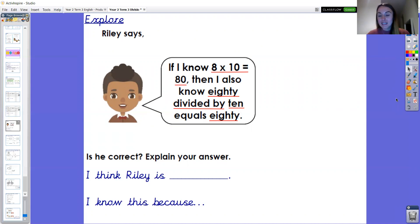Well done year two. I loved your reasoning skills. Okay I'm going to share my thinking with you now. So I think Riley is incorrect. I know this because 80 divided by 10 equals 8. Whereas Riley thought it was 80 didn't he? Well spotted year two.